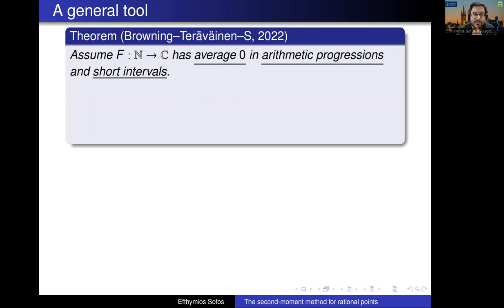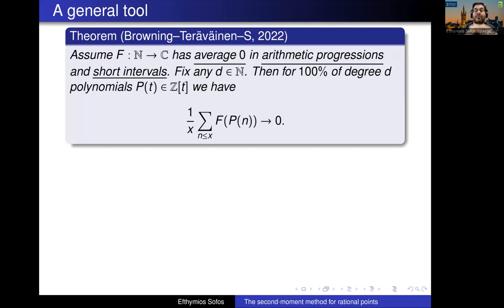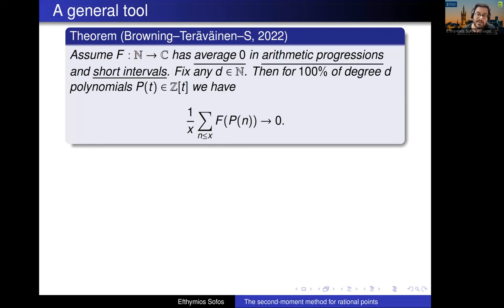What are the properties? Assume you have a function defined on the integers that has zero average in arithmetic progressions and in short intervals. Then, fixing any degree d for the random polynomial, for 100% of degree-d integer polynomials, this sum — (1/x) times the average of f over the polynomial value — converges to zero. In particular, you can say that the Chowla conjecture holds on average for typical polynomials.